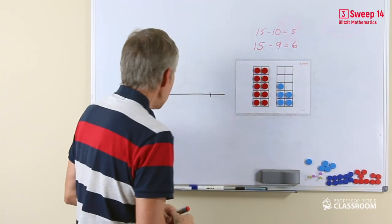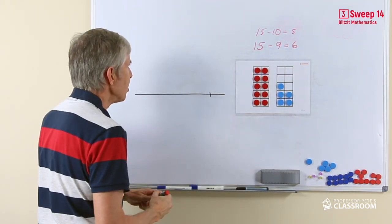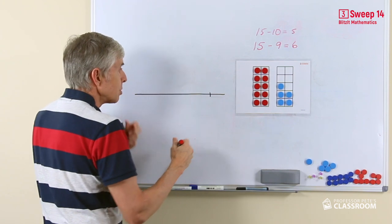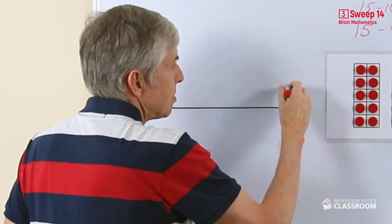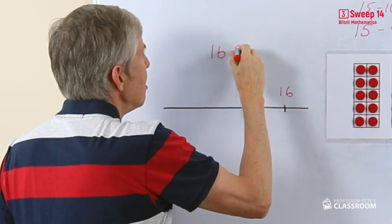The 10 frame makes it clear. Let's look quickly at an open number line, let's take a different example. So we'll say 16, so we're going to do 16 take away 9.